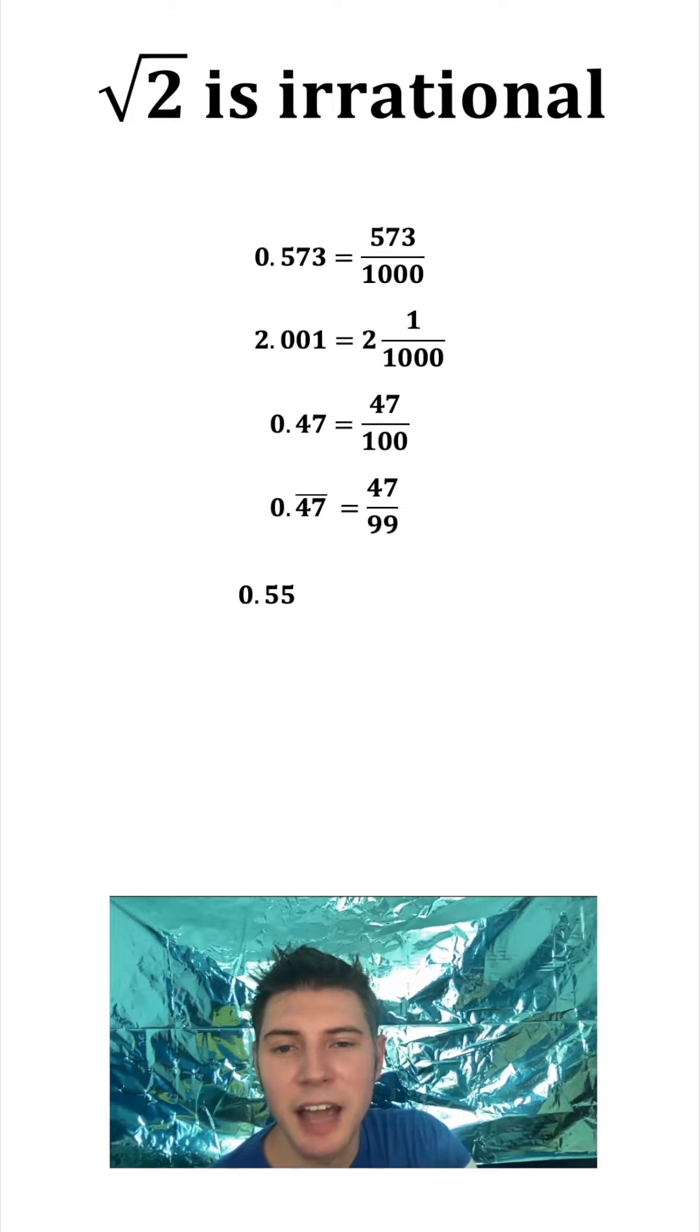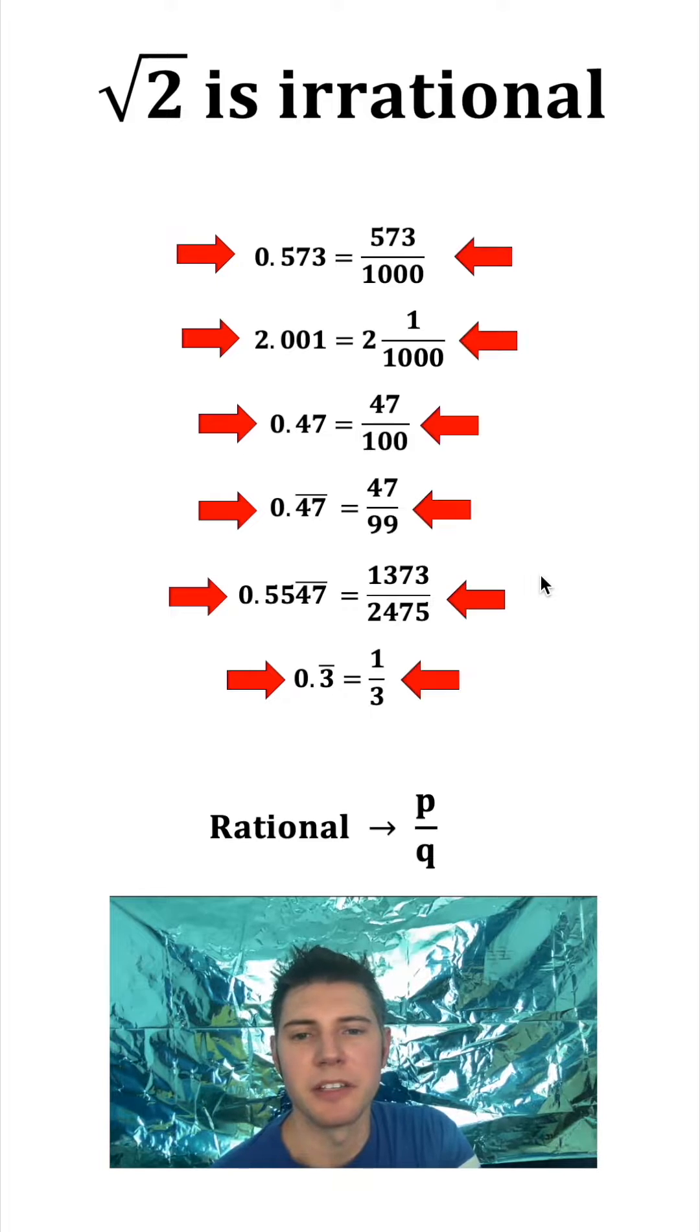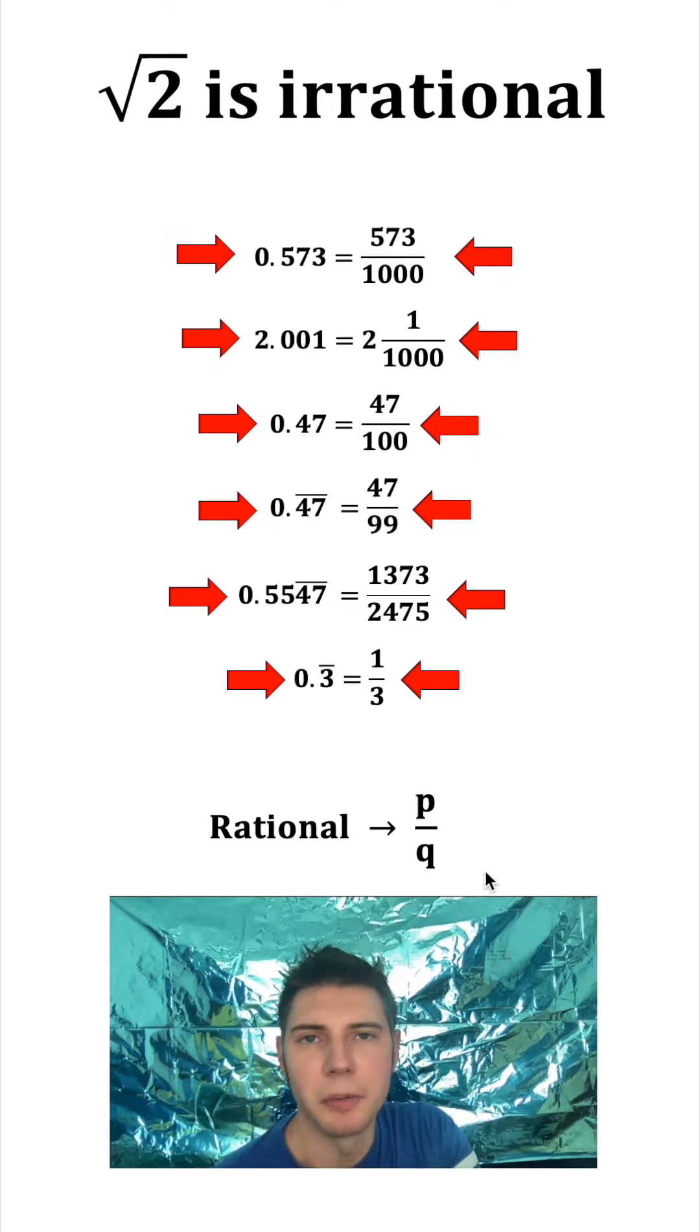And even if that repeating happens later on, that can also be expressed as a ratio of whole numbers. These are all rational numbers because they can all be expressed as a ratio of whole numbers, some P over Q.